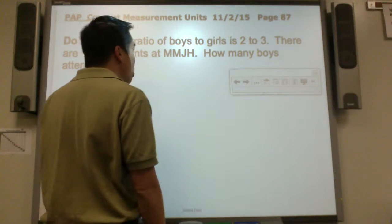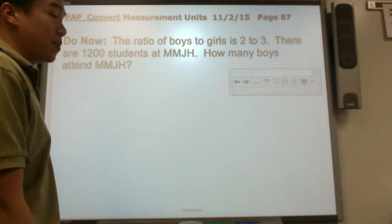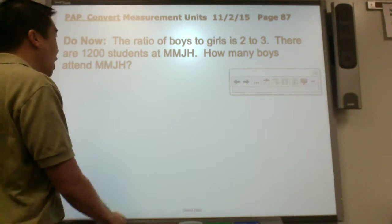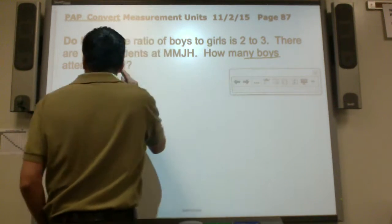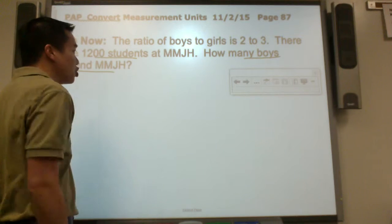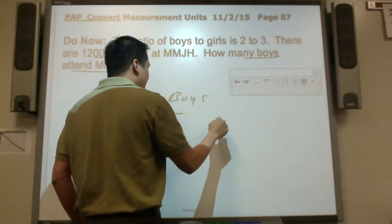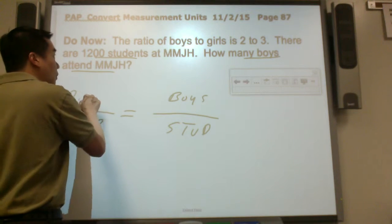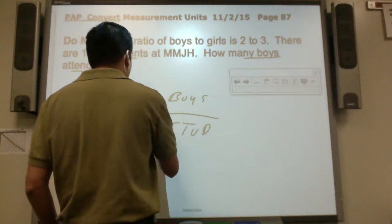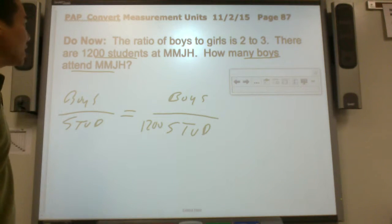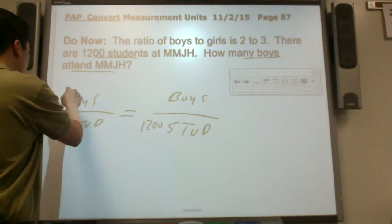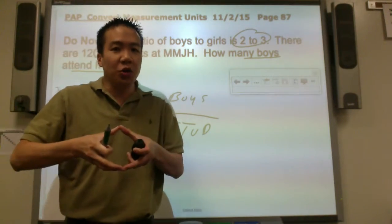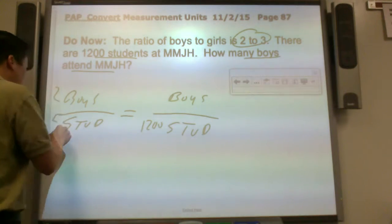For example, the ratio of boys to girls is 2 to 3. There are 1,200 students at McMeans Junior High. How many boys attend McMeans Junior High? The question is asking about how many boys attend this school. So a ratio would be about boys and students. There are 2 boys and 3 girls, so there are 5 students in that small group.